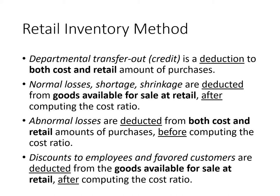Normal losses, shortage, and shrinkage are deducted from goods available for sale at retail only — not cost. Take note: this is after computing the cost ratio. So after you compute the cost ratio, that's the only time you deduct losses. In practice, normal losses are added to net sales instead of directly deducting from goods available for sale at retail, which achieves the same effect.